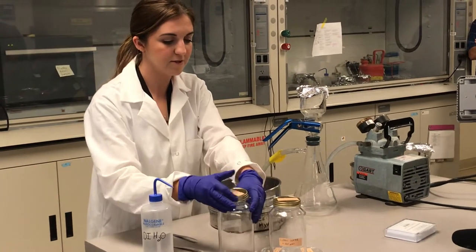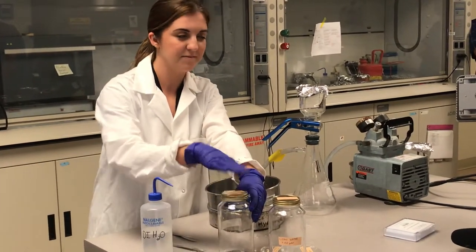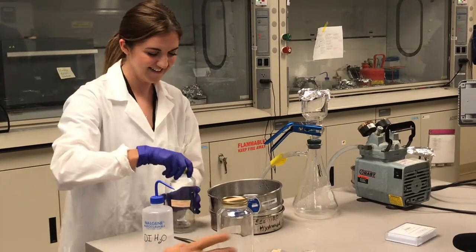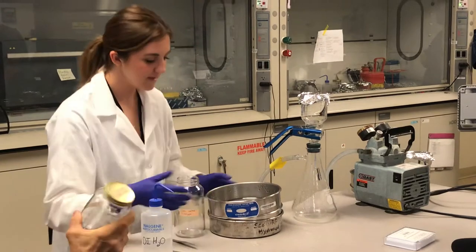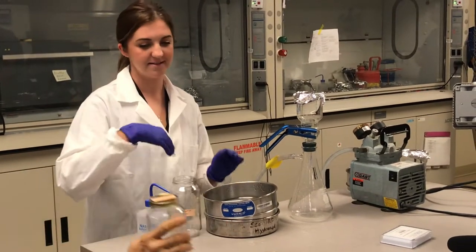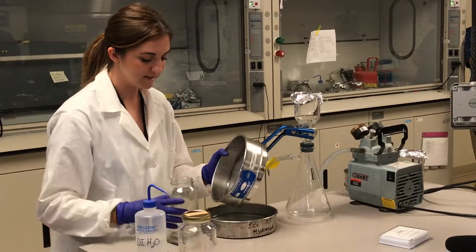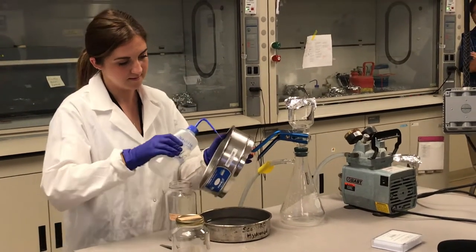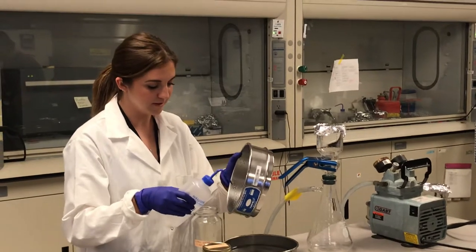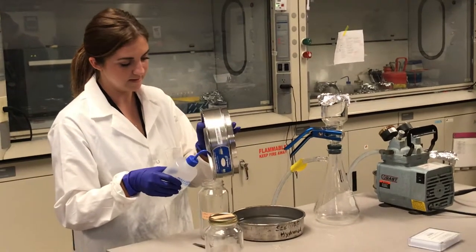And then you need your second size fraction jar. I should have capped that before I move on to the next one. Give your second jar. And then you do the same again. So you would rinse everything that falls into the bottom of the sieve pan into your sample jar. So I've rinsed it three times already. I'm just going to do a little bit of a rinse into the jar.